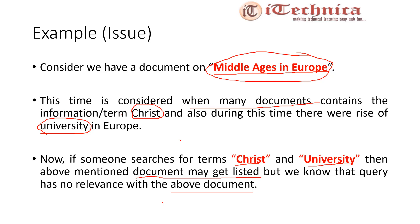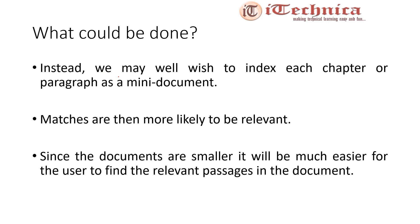In such cases, we may wish to index each chapter or paragraph as a mini document. We can take each chapter of the book and save it as a different, smaller document. Matches are then likely to be more relevant, and since the documents are smaller, it is much easier for the user to find relevant passages. For example, 'Christ' may appear in the first chapter and 'University' in the second, so if we treat the complete document as a unit, it gets indexed, but separating the chapters reduces that probability.